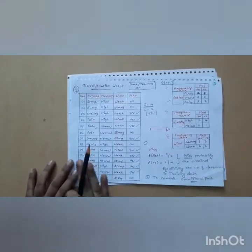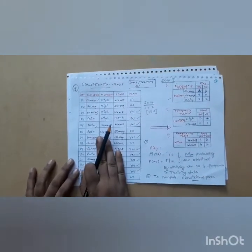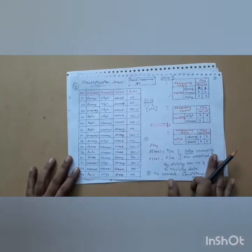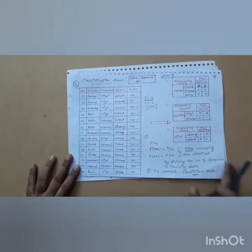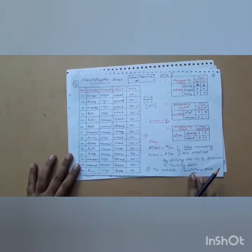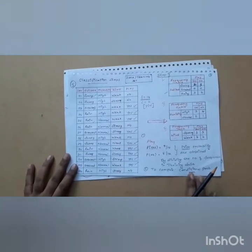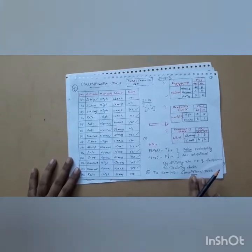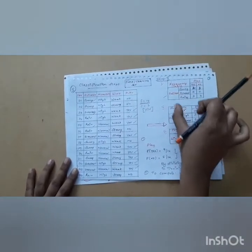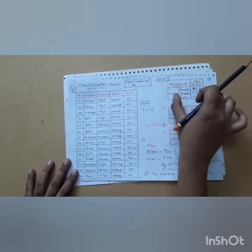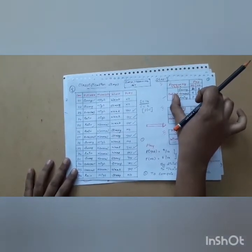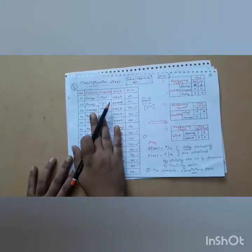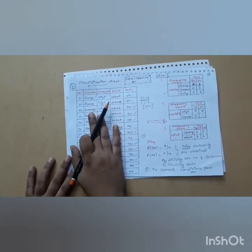So this is how you calculate the frequency table. For the given training set: first, get the training set; then calculate the prior probability; then compute the conditional probability by calculating the frequency table for each and every attribute given in the training dataset.